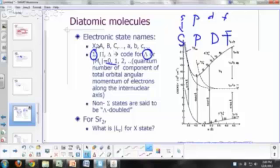In this case, instead of sigma, pi, delta for one electron system, for diatomic molecules with more than one electron, you can use capital sigma, capital pi, capital delta.